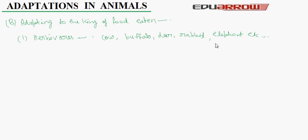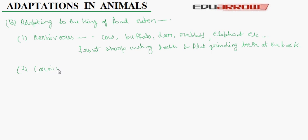Second is carnivores. Carnivores are meat eaters like lion, tiger, foxes, dogs, eagles, etc.